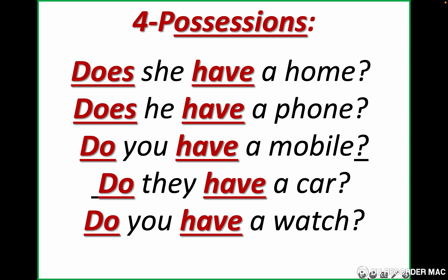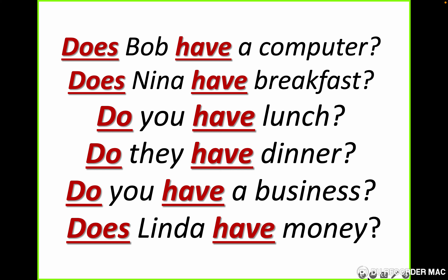Possessions — it means the things we have — from the verb 'to possess.' Does she have a home? Does he have a phone? Do you have a mobile? Do they have a car? Do you have a watch? More examples with 'have': does Bob have a computer? Does Nina have breakfast? Do you have lunch? Do they have dinner? Do you have a business? Does Linda have money?